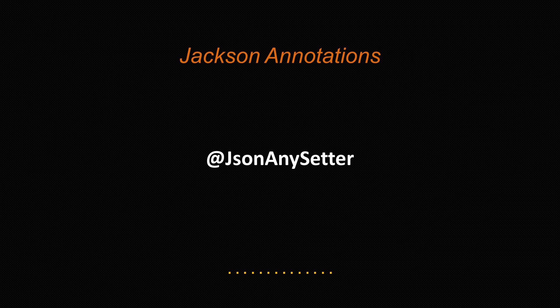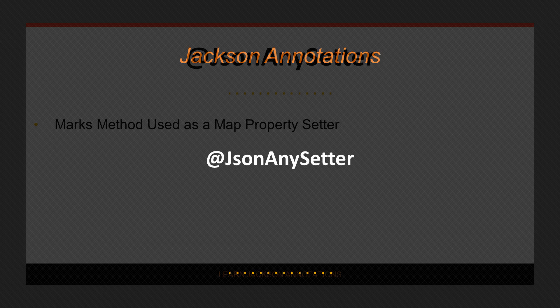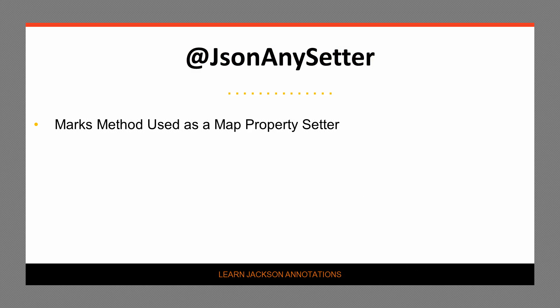Let's take a look at the JSONAnySetter annotation, which is used to identify a method as a setter method for a map of properties. The JSONAnySetter annotation is used to mark a specific method as a setter method for a map property. This method must be non-static and accept two arguments. The first argument will be the key, and the second argument the value to associate with that key.